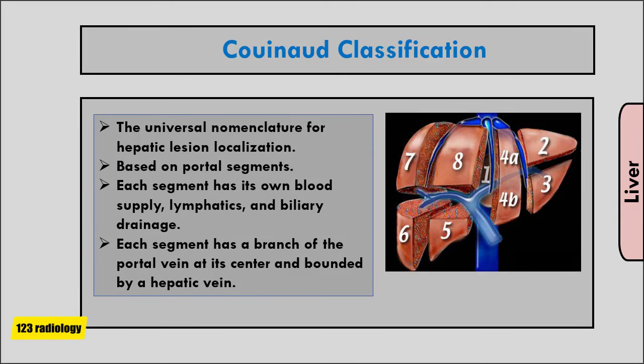Because sonography allows evaluation of liver anatomy in multiple planes, lesions can be localized to specific segments, which can aid surgical planning and follow-up of lesions over time. Couinaud anatomy is now the universal nomenclature for hepatic lesion localization, and this description is based on portal segments and is of functional and pathologic importance.